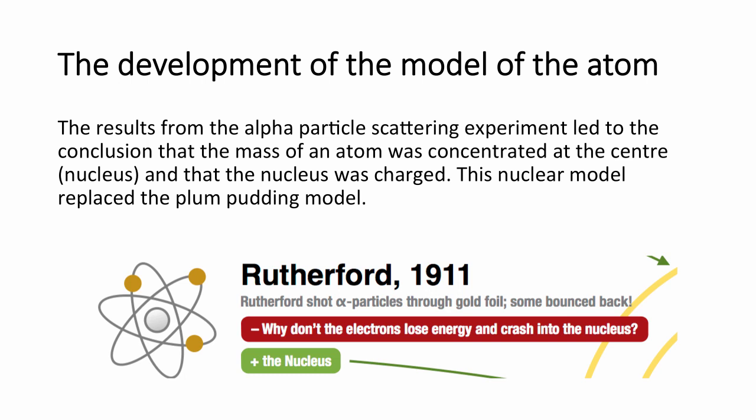Following Rutherford's alpha scattering experiment, he led to the conclusion that as alpha particles pass through the gold foil, the majority of the atom is actually empty space. However, some were deflected back. Since alpha particles have a positive charge, the centre of the atom must be a centre of positive charge — and we called that the nucleus. This is what we call the nuclear model: an atom has electrons orbiting on the outside but has a nucleus in the centre. However, we did not yet know why electrons have specific energy in line spectra.